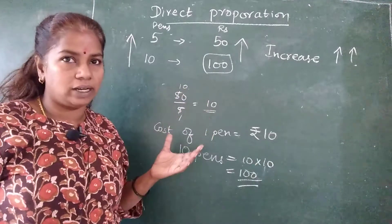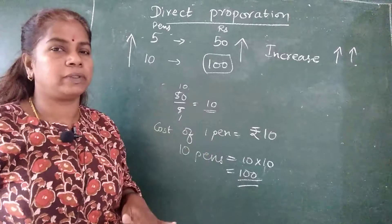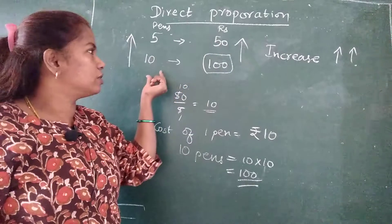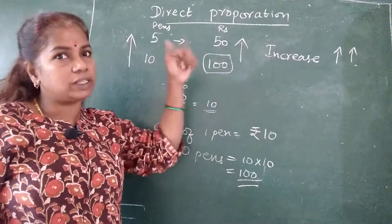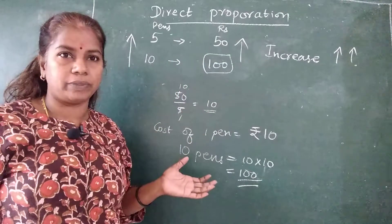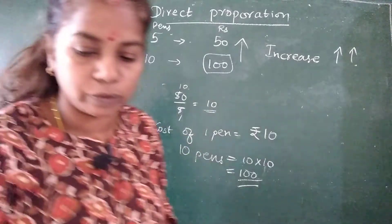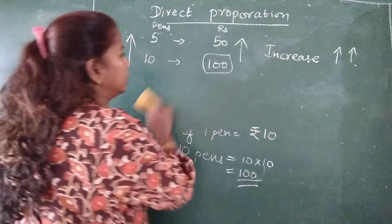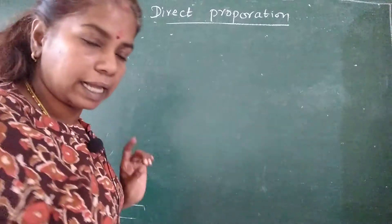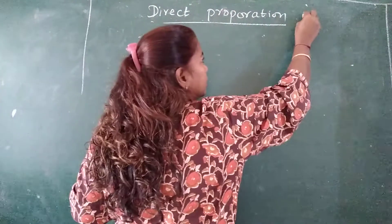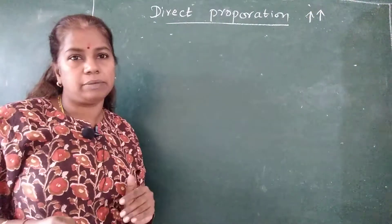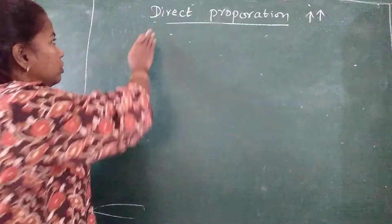How to find the rate: check the cost of 1 commodity and then multiply with the increased quantity. Cost of 5 pens was 50 rupees; cost of 10 pens is 100 rupees. First we found the cost of 1 pen, then we found the cost of 10 pens. In simple terms, direct proportion means if there is an increase in one product or commodity, there will be an increase in the other — both move in the same direction.